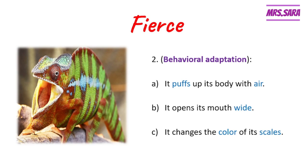So the behavioral adaptation of the panther chameleon is that it fares when it feels any danger: first, it puffs up its body with air; second, it opens its mouth wide; and third, it changes the color of its scales.